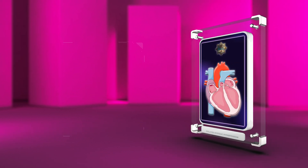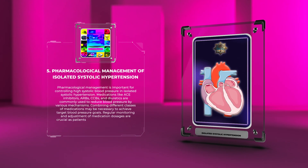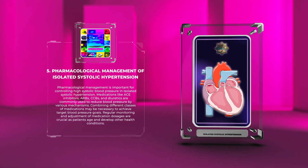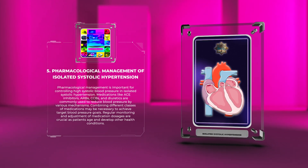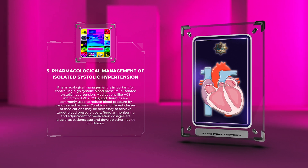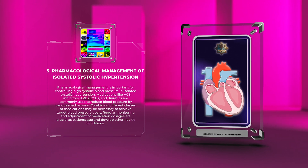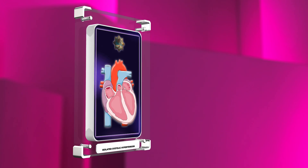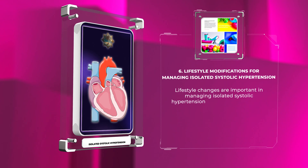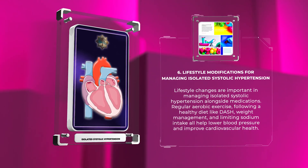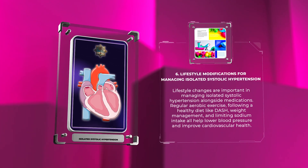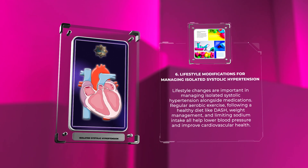Pharmacological management is important for controlling high systolic blood pressure in isolated systolic hypertension. Medications like ACE inhibitors, ARBs, CCBs, and diuretics are commonly used to reduce blood pressure by various mechanisms. Combining different classes of medications may be necessary to achieve target blood pressure goals. Regular monitoring and adjustment of medication dosages are crucial as patients age and develop other health conditions. Lifestyle changes are also important, including regular aerobic exercise, following a healthy diet like DASH, weight management, and limiting sodium intake, all of which help lower blood pressure and improve cardiovascular health.